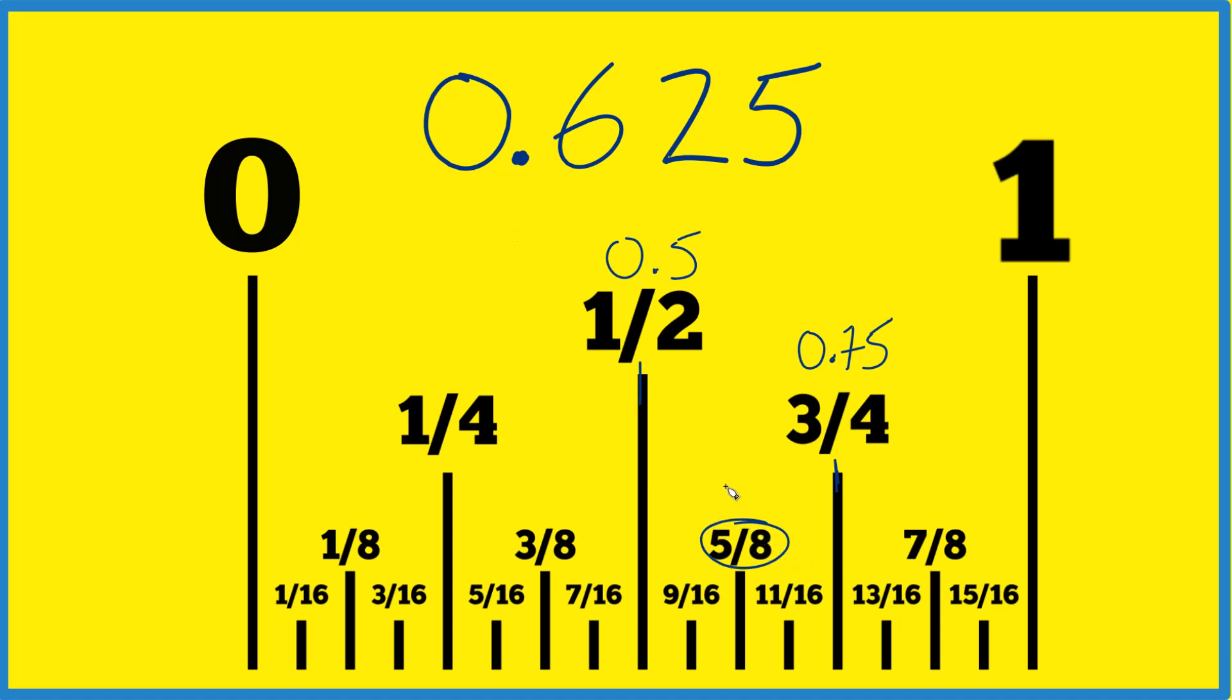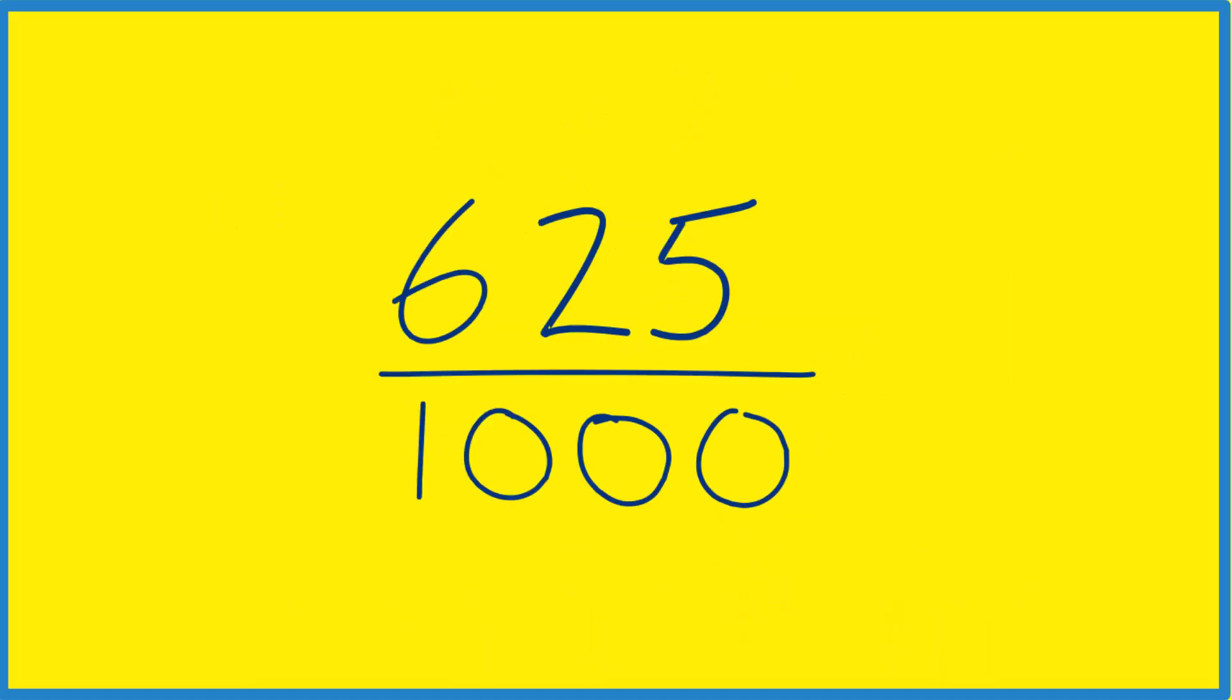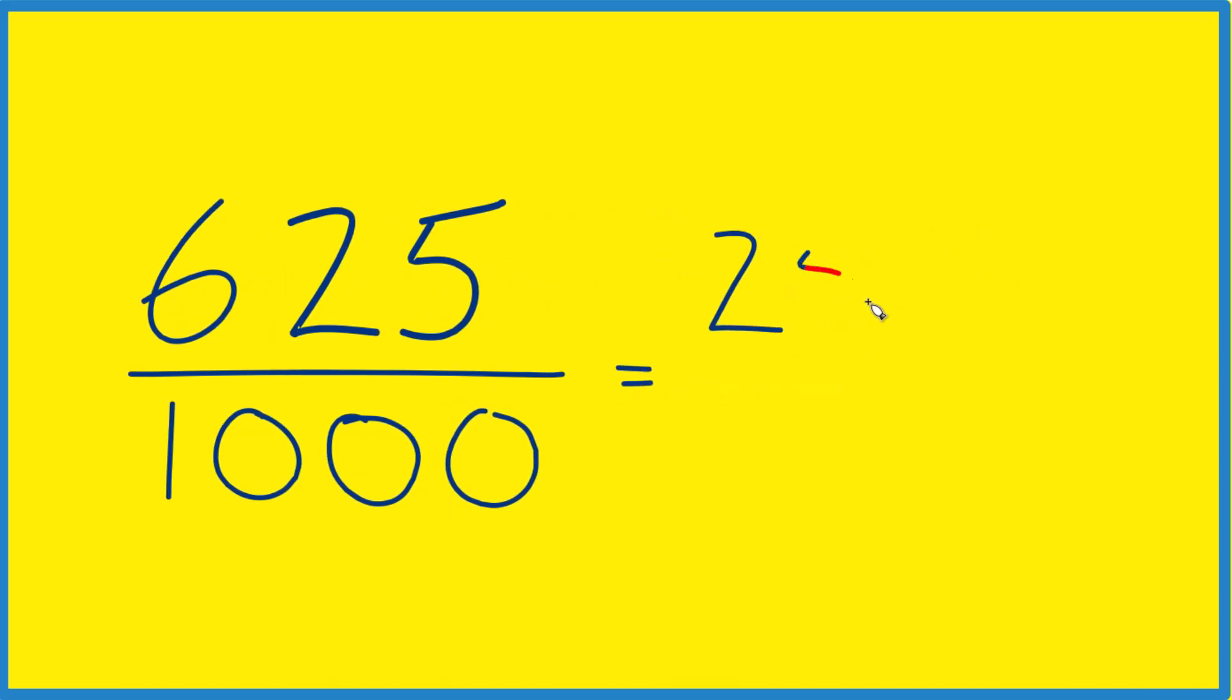There's another way you could do this. We could treat this as 625 over a thousand. We could divide each of these by 5, but let's try 25. 25 times 25 is 625, so we have 25. A thousand divided by 25 is 40.